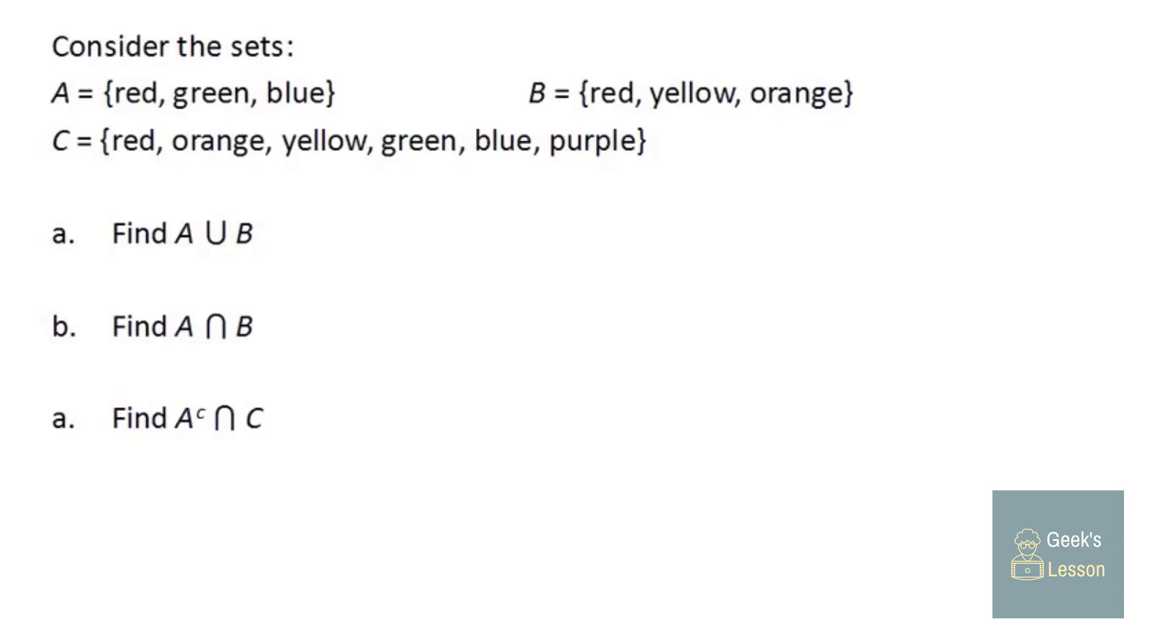So consider these sets. And we want to find these things. Now, in order to talk about these things, we're going to need to understand what they are. So first off, this symbol here, this U-shaped symbol, is the symbol for a union. So the idea of a union is that it combines two things together.